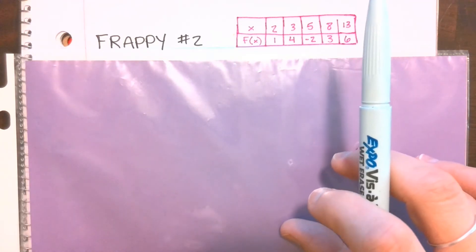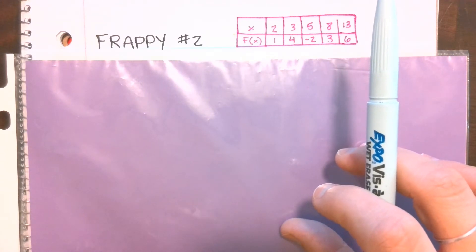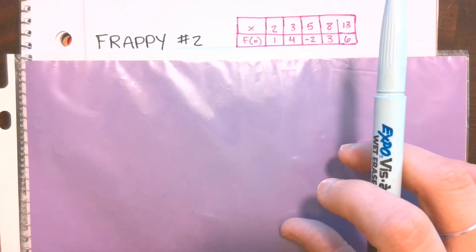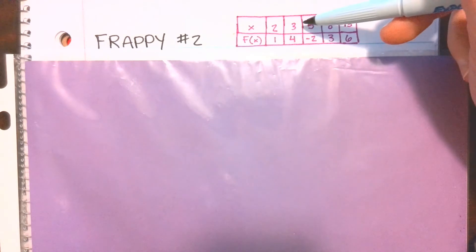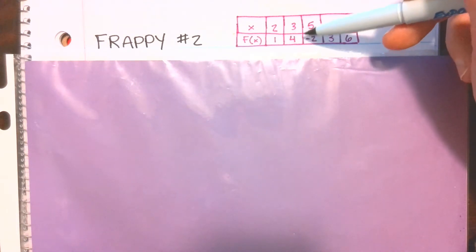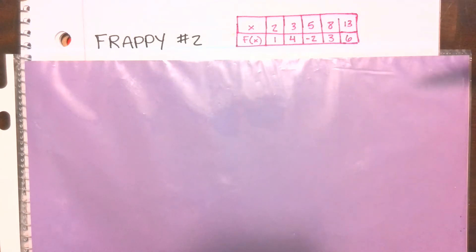Okay, so our first question asks us to approximate f prime of four, which we know that f prime of four is asking us for the instantaneous slope when x is four, and we're not given a value there.